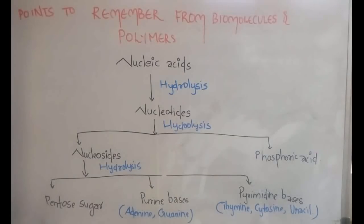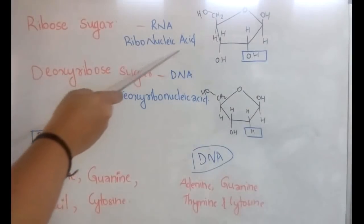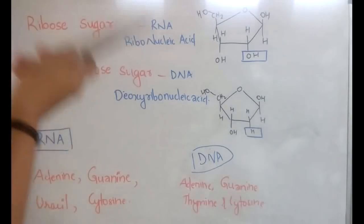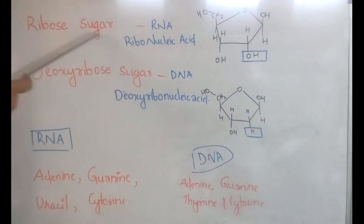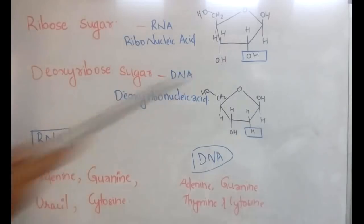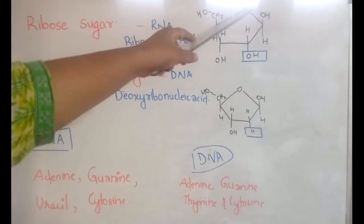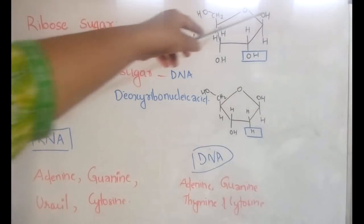Now we'll go to some important points to remember from DNA and RNA. RNA means ribonucleic acid, and it is called so because the pentose sugar that makes up this nucleic acid is the ribose sugar. We have the structure of ribose sugar here — it is a furan ring, that is a five-membered ring with the hetero atom oxygen.